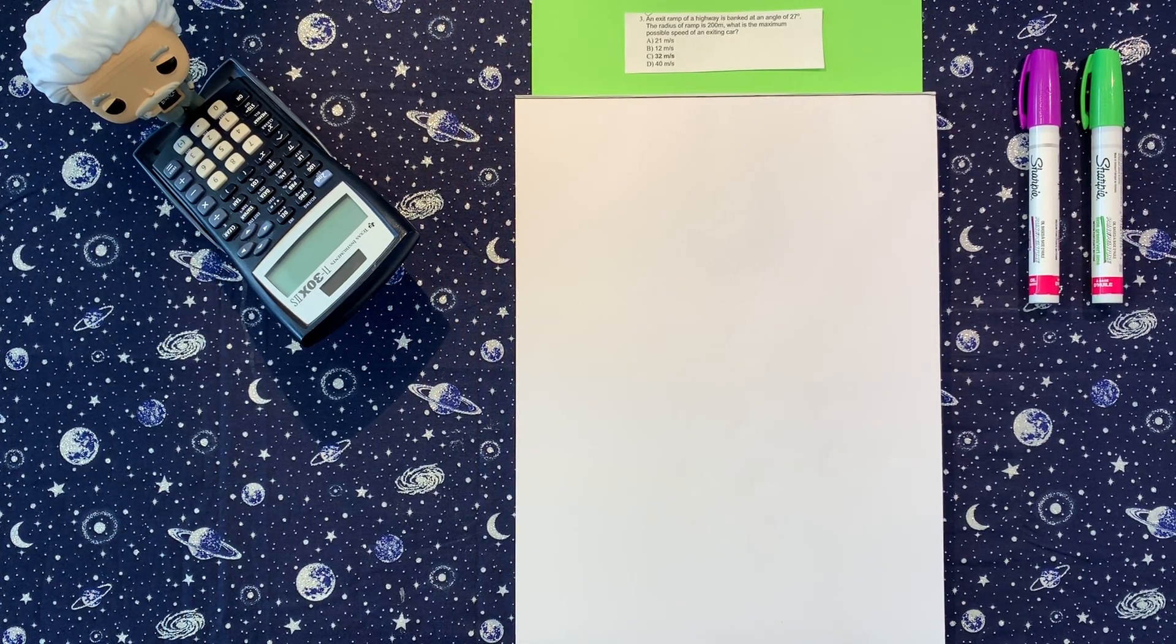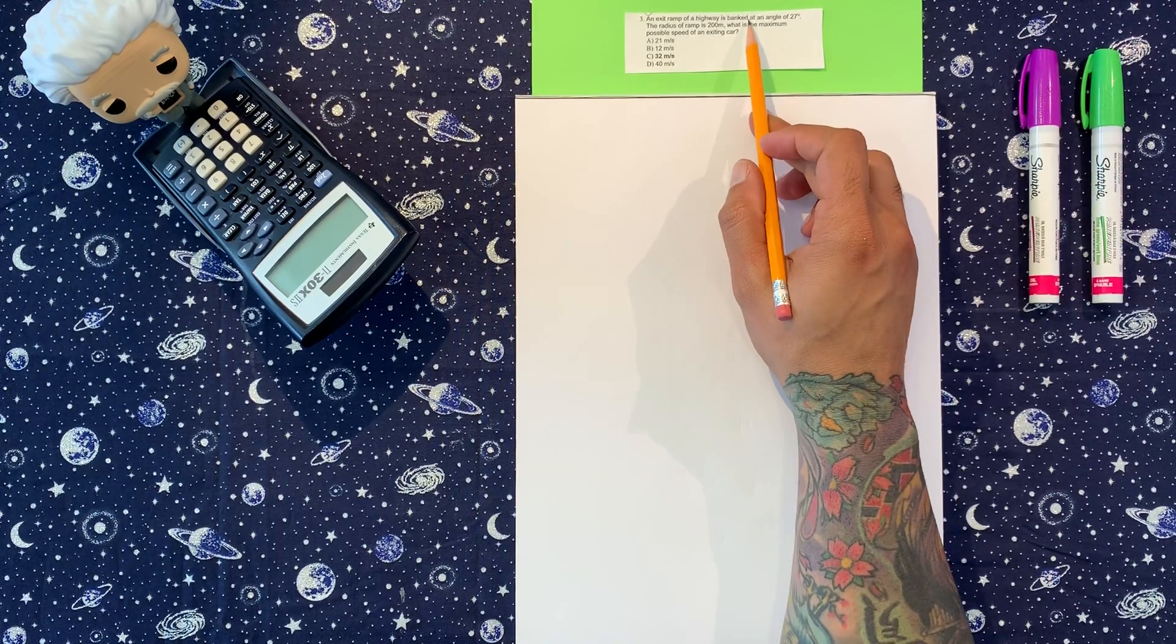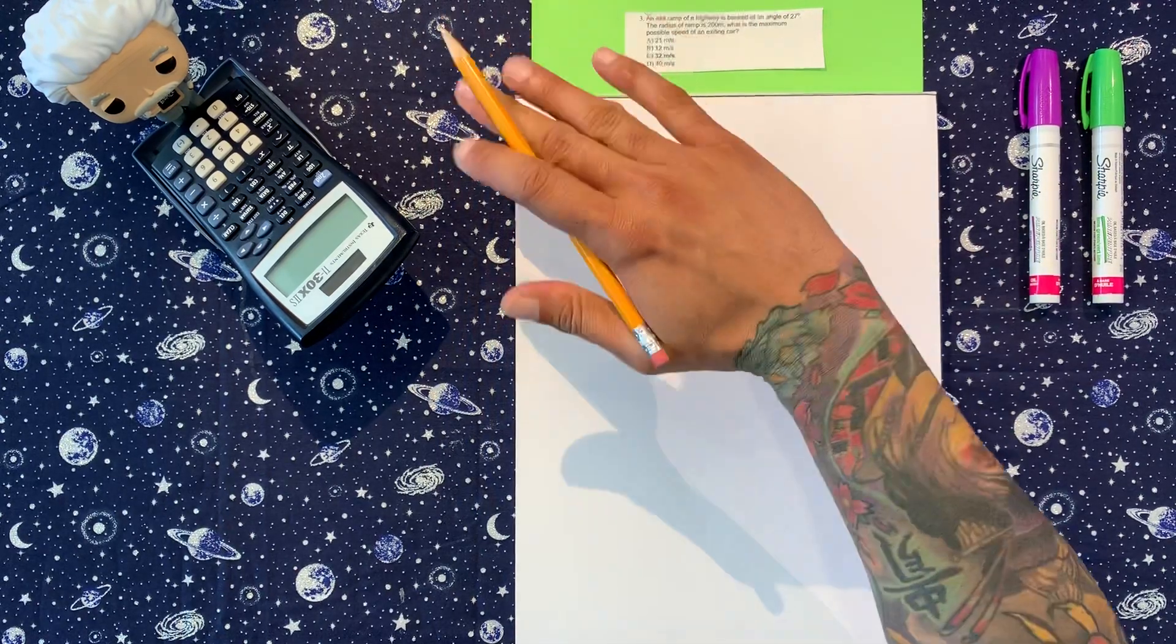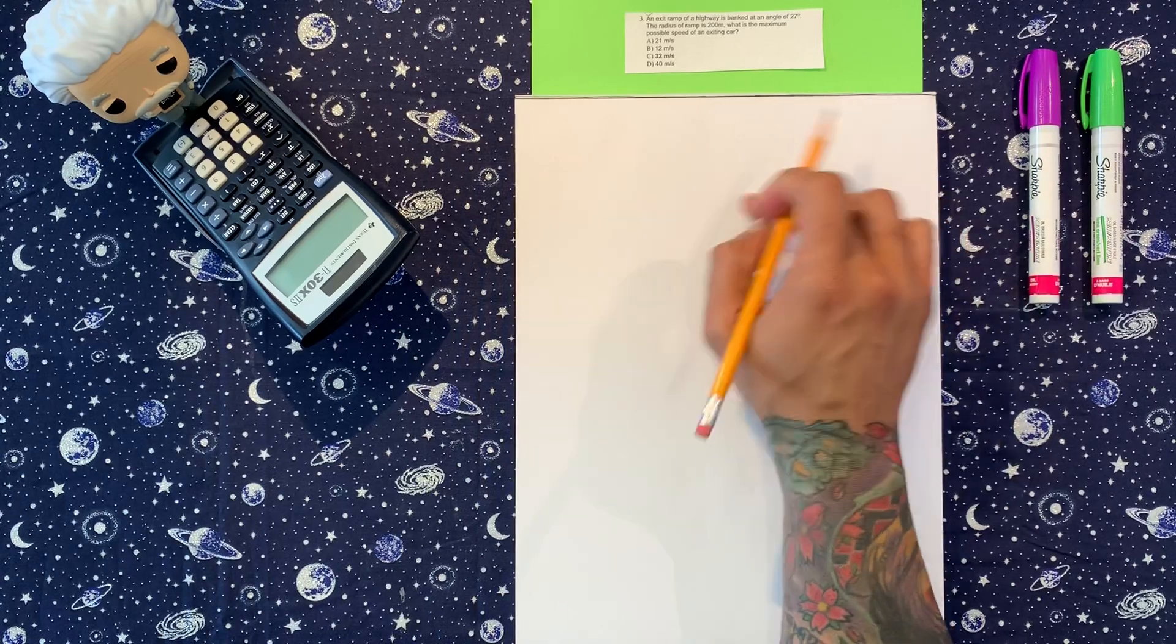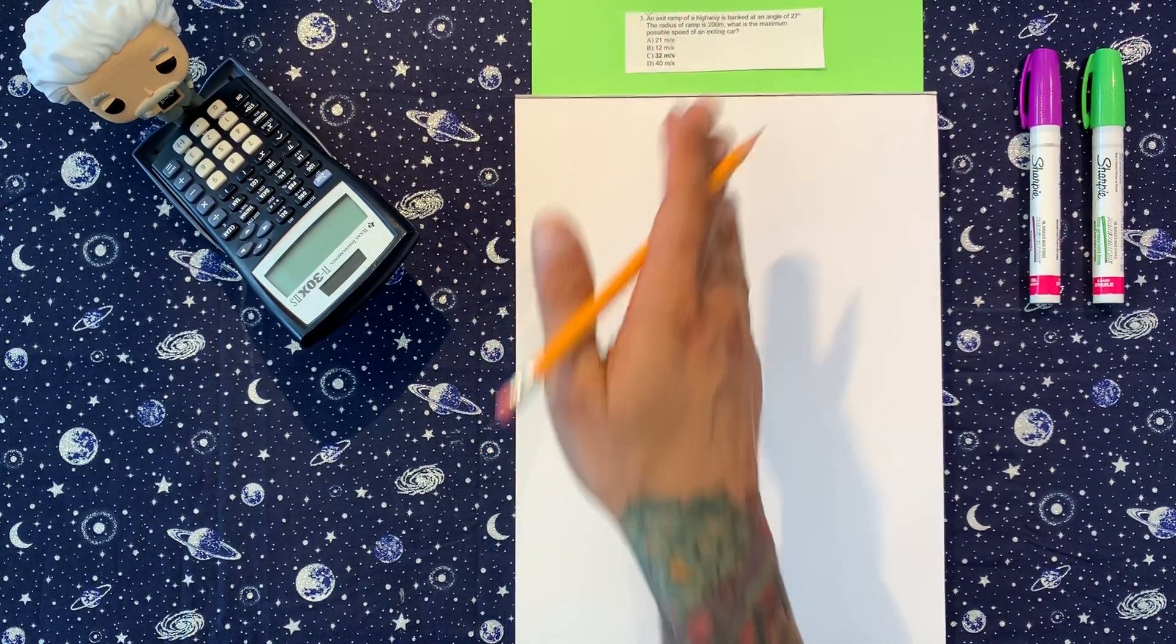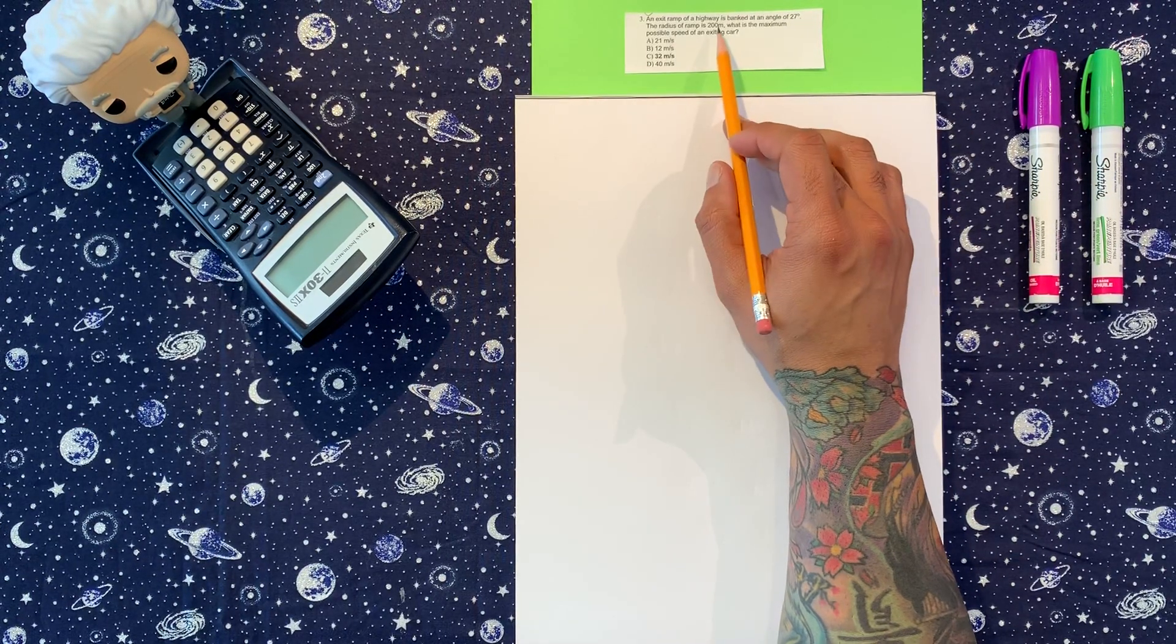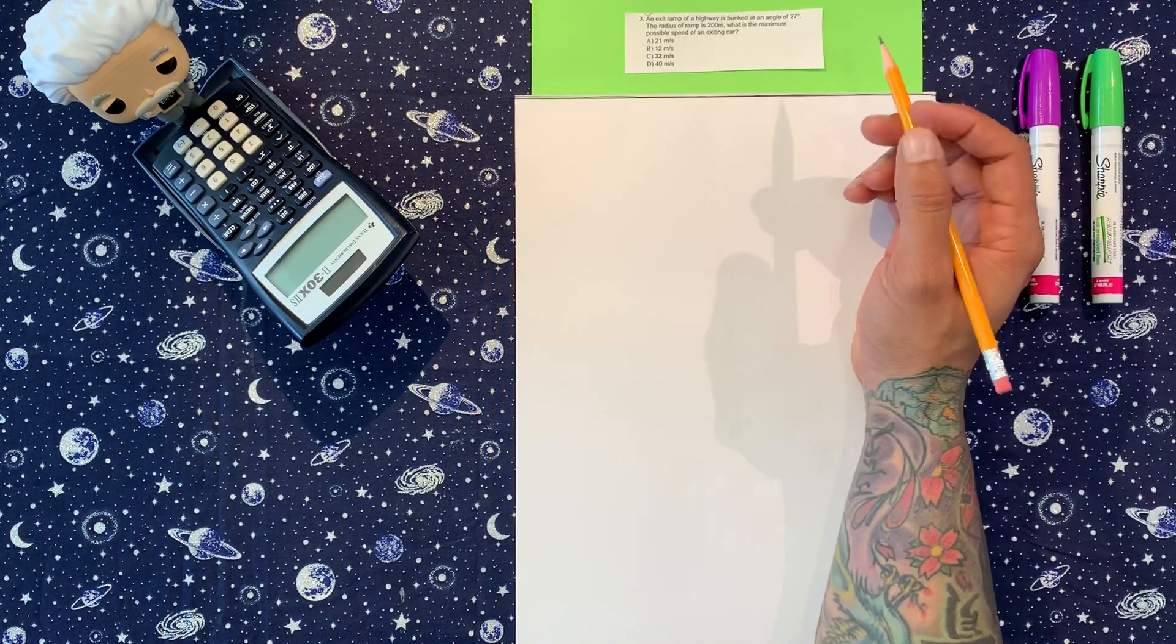Next question on the exam. We have an exit ramp of a highway banked at an angle of 27 degrees. This word banked just means that it's at an angle. Imagine a track, but the track is angled a little bit, so you're driving at an angle on it. At an angle of 27 degrees, the radius of the ramp is 200 meters. What is the maximum possible speed of an exiting car?